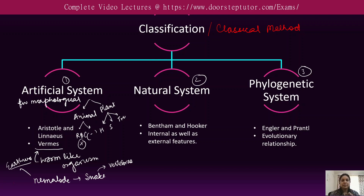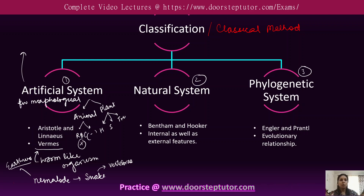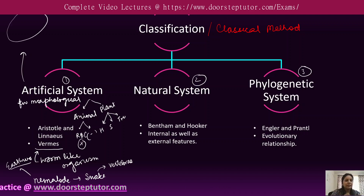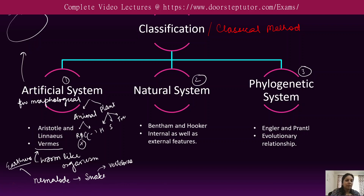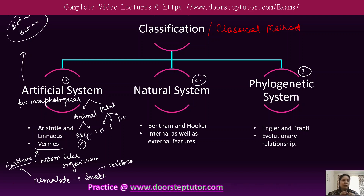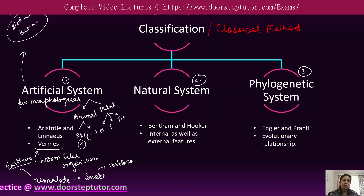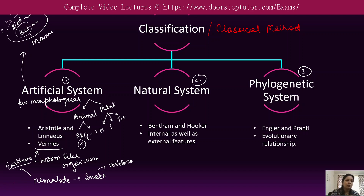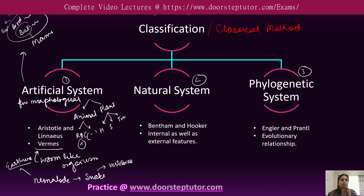Another drawback is that the artificial system separated two closely related species. For example, birds and bats both fly in the air, so they were placed in one group since both are flying. But bat is a mammal belonging to a different group, while birds belong to the bird group. In this way, two closely related species were separated.